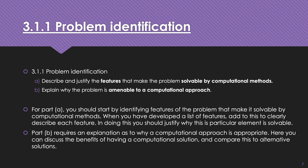Problem identification breaks down into two separate parts, and we have subheadings we might want to include in our document. Part A is to describe and justify the features that make the problem solvable by computational methods. We need to identify features of the problem that exist in the real world situation that lend themselves towards a computational approach. We can't just supply a list — we need to describe each feature and justify why that particular element is solvable using a computational method.